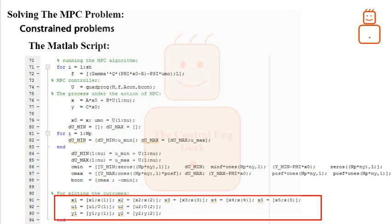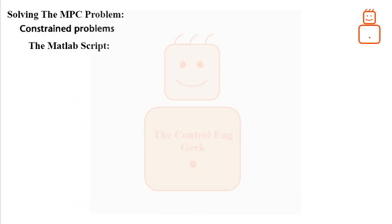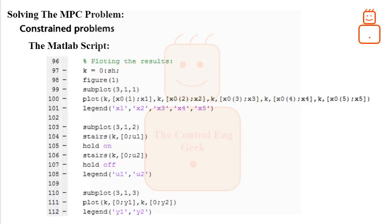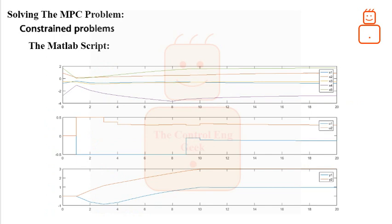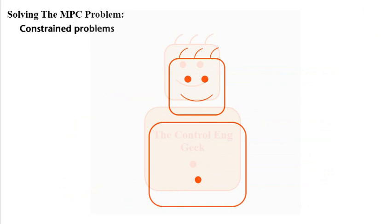The very last part of main file is the part that plots the results. Before running the main file, please make sure that you have the optimization toolbox installed in your MATLAB for the quadprog file to work. If you run the main file, you should get a plot similar to shown here. You can find a copy of the MATLAB files in the description.